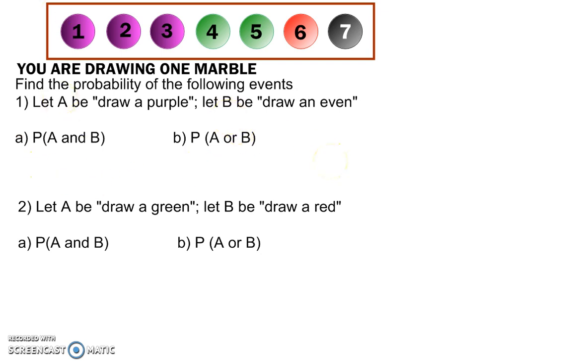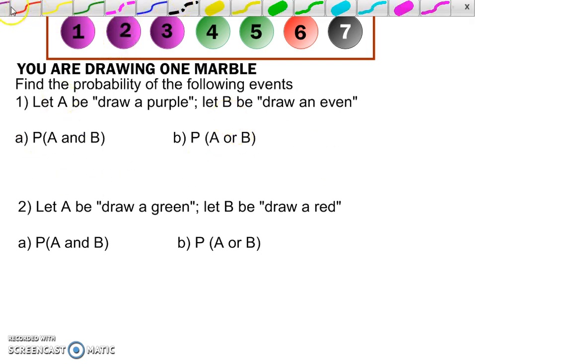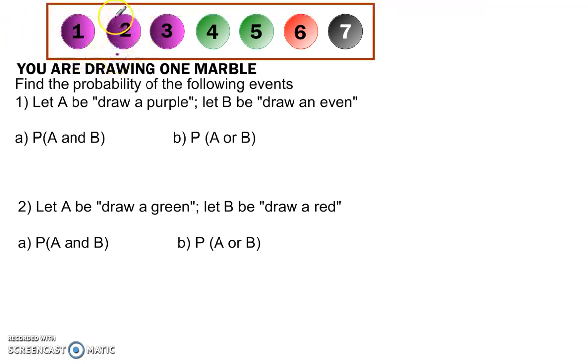Alright, so we looked at this example here, and we said the probability of drawing a purple and drawing an even number that is both purple and even, that's only the two, so that's one out of the seven.